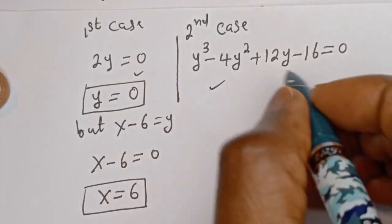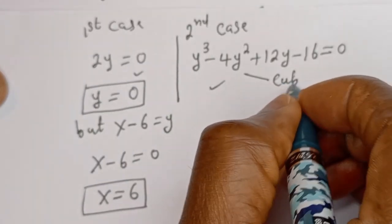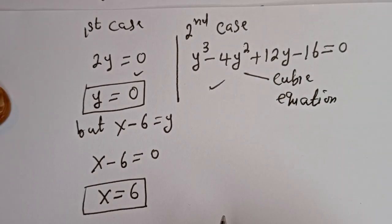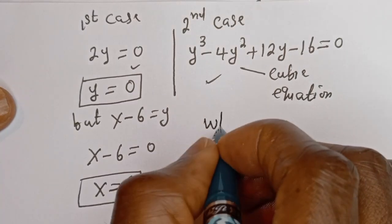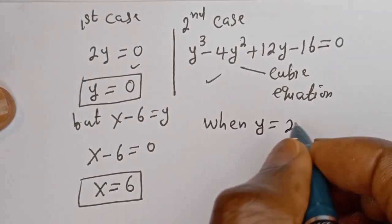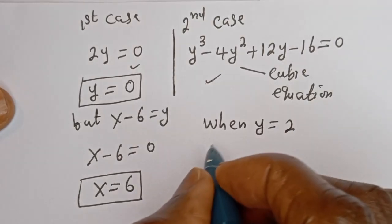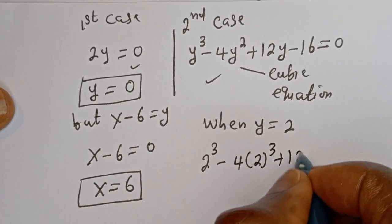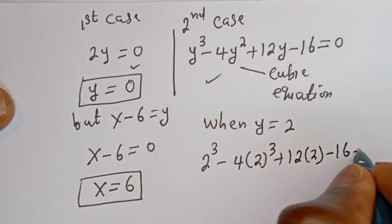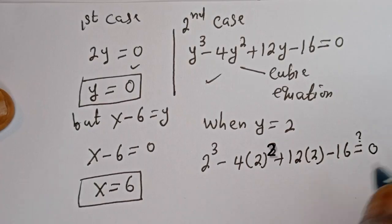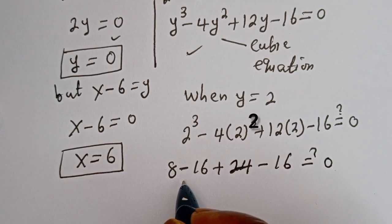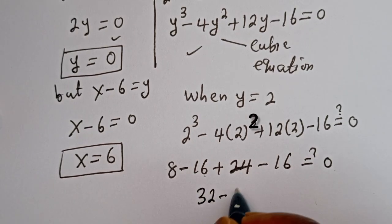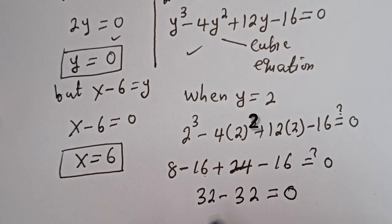From the second case, this is a cubic equation. Let's check when y equals 2: we have 2³ minus 4 times 2² plus 12 times 2 minus 16. That is 8 minus 16 plus 24 minus 16, which gives 32 minus 32 equals 0. Therefore y = 2 is a factor.